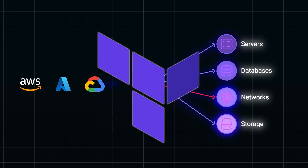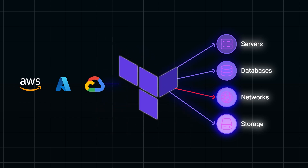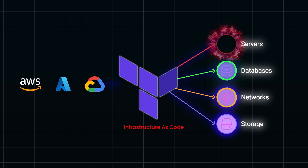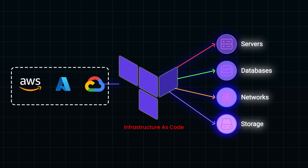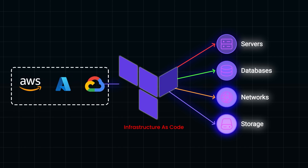That's where Terraform steps in. Terraform lets you define your infrastructure as code, which means instead of manually setting things up, you write configuration files that describe exactly how your infrastructure should look. Terraform then takes care of provisioning, updating, and even tearing down resources to match their desired state. The best part? Terraform is cloud agnostic, so whether you are working with AWS, Azure, or Google Cloud, you can use the same workflow.